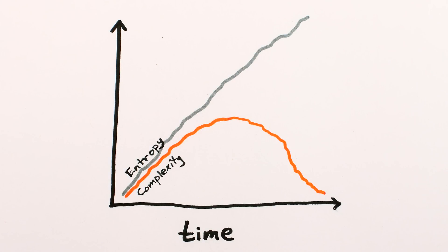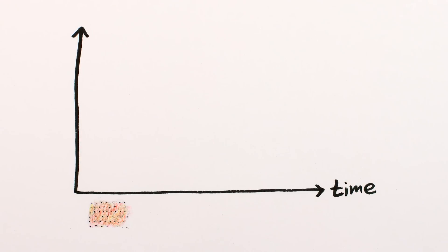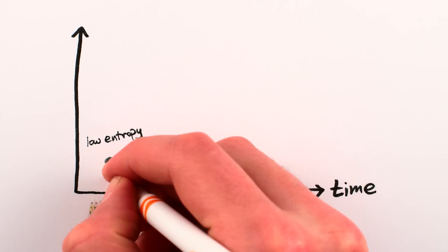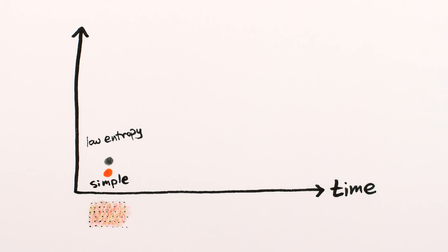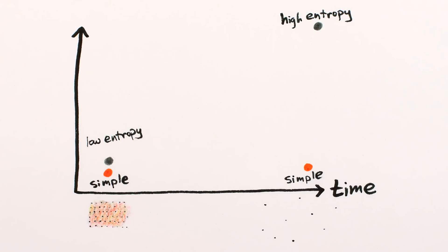Complexity can be a natural step along the path to increasing entropy. The best example is the universe itself. The early universe was very smooth and very dense. That's low entropy and also extremely simple. The far future will be smooth again but very dilute. That's high entropy and again extremely simple.